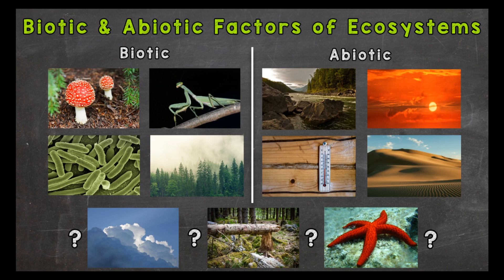Now remember, an ecosystem is made of living and non-living factors. Biotic means living or once was living, and abiotic means non-living. These biotic and abiotic factors work together in order to create an ecosystem.